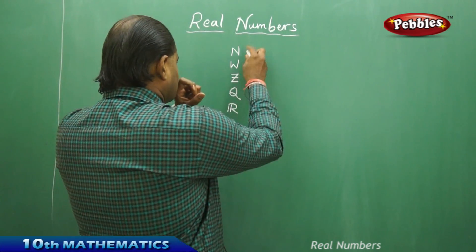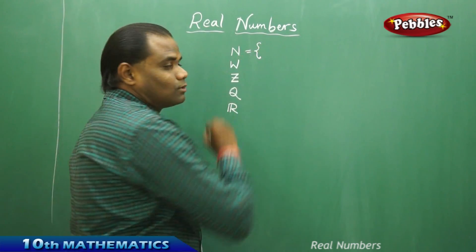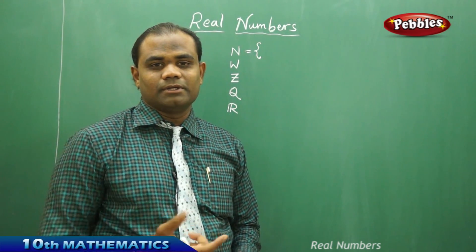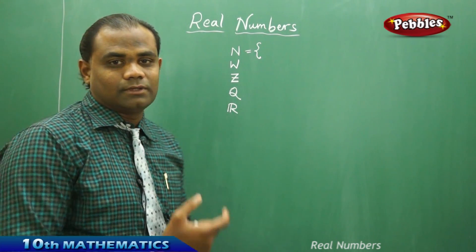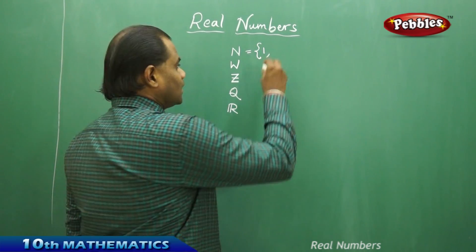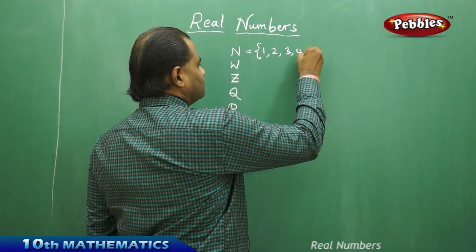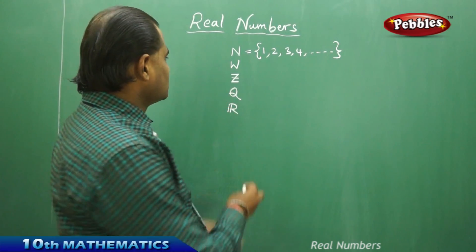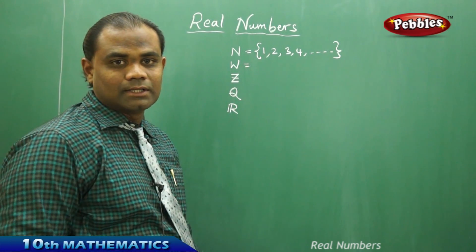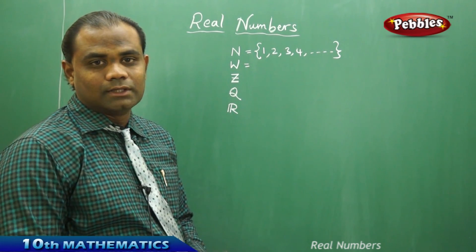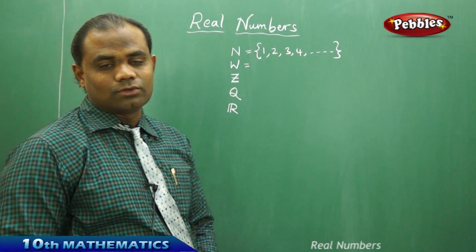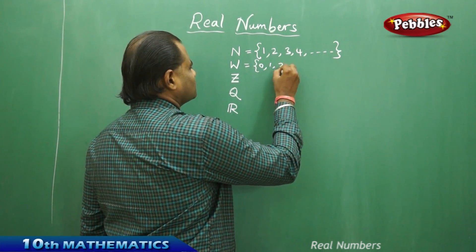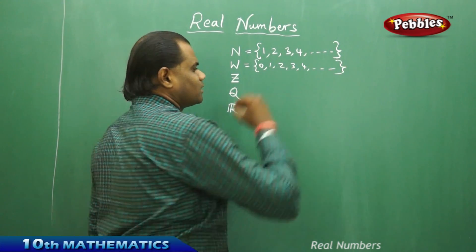Natural numbers obviously start with 1. The least natural number is 1, and the highest is undefined — it can be any big value. Natural numbers are 1, 2, 3, and so on to infinity. For whole numbers, the only difference is that it has an additional 0 along with all the natural numbers. So if 0 is included with the natural numbers, we get whole numbers: 0, 1, 2, 3, and so on.